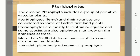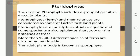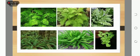Characteristics of Pteridophytes: they are seedless vascular plants that show alternation of generations. The sporophyte has true stem, roots, and leaves. They are reproduced by spores which are derived in sporangia.